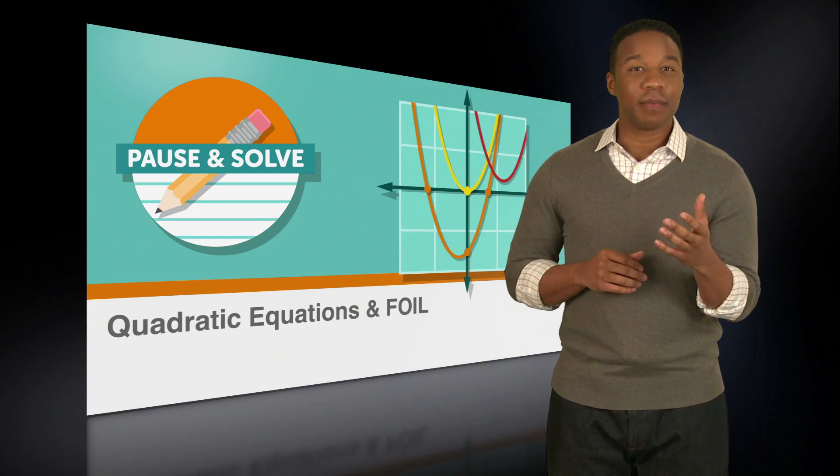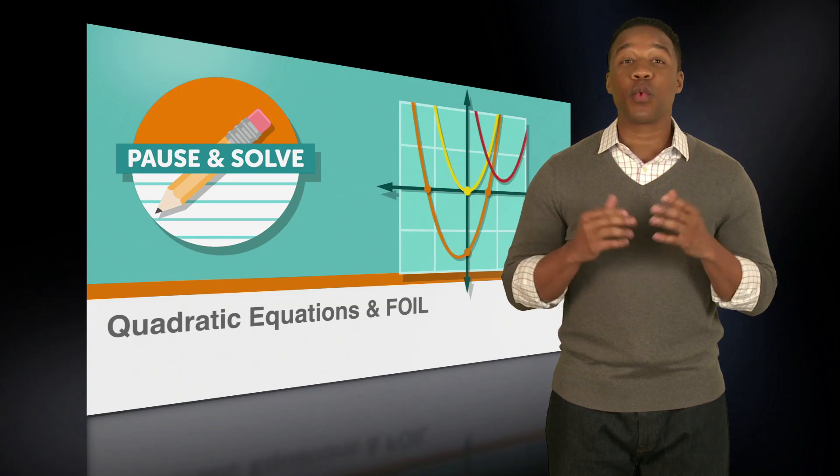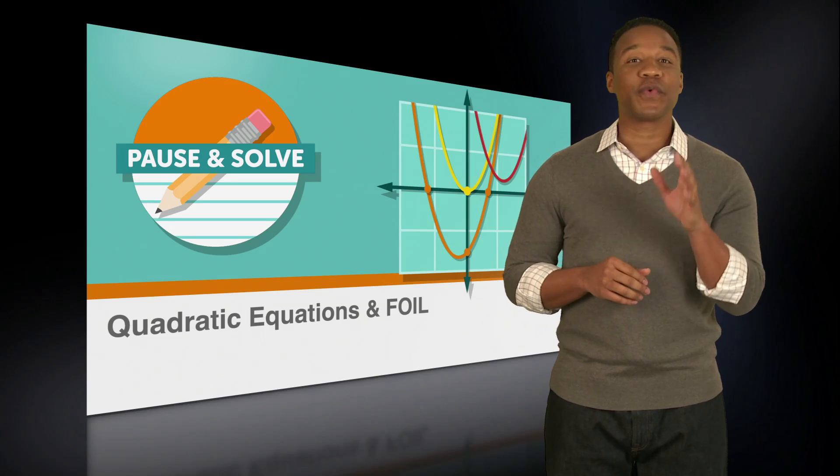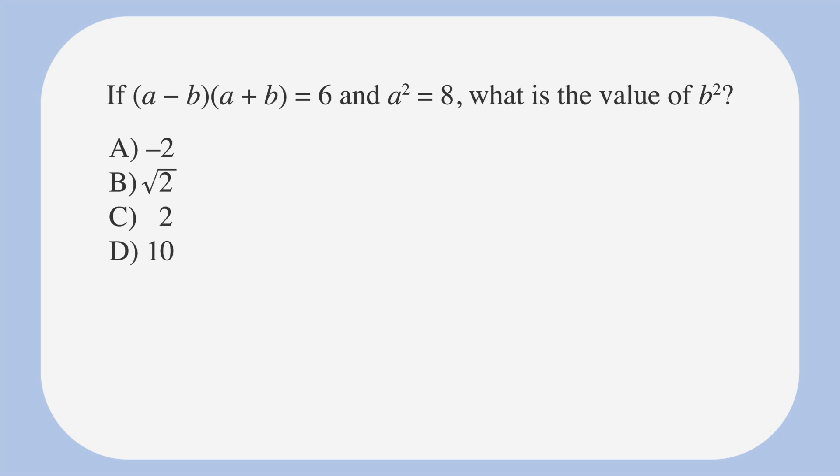We're going to finish up this lesson with a pause and solve. We'll take a look at the problem, then you can pause the video and work it out on your own. We'll go through it together once you're done and have restarted the video. If a minus b times a plus b equals 6 and a² equals 8, what is the value of b²? The answer choices are a, negative 2, b, the square root of 2, c, 2, and d, 10. All right, it's up to you now. Ready, set, pause.